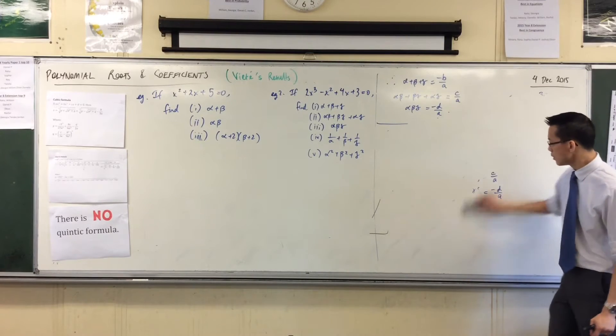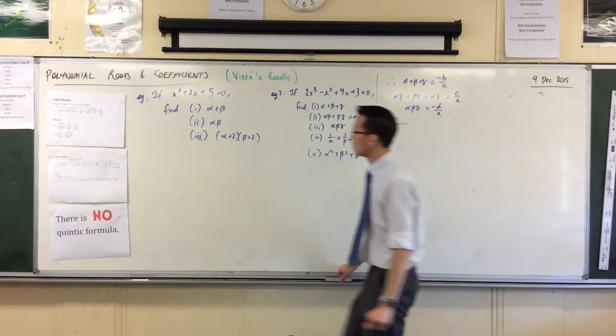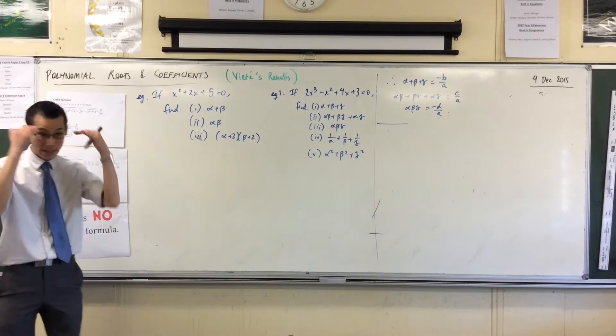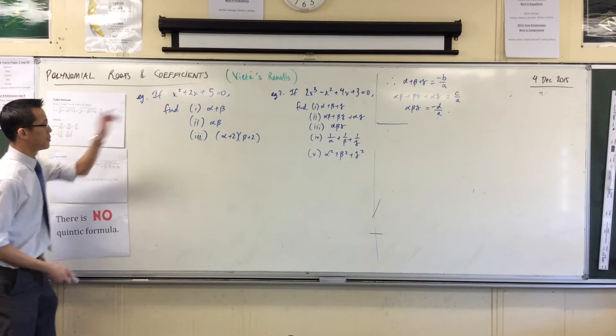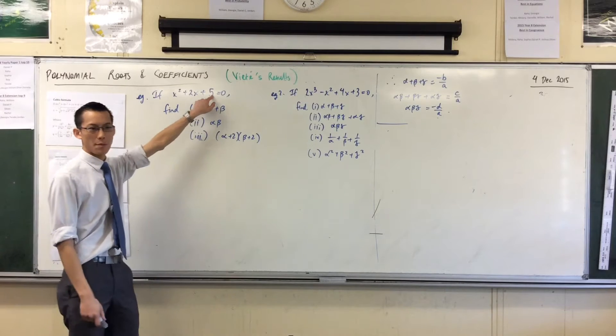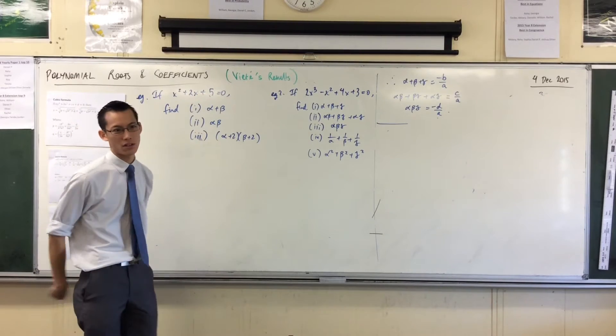Have a look at the first one. I've deliberately chosen one where, if you just mentally do your discriminant, B squared is 4, minus 4ac will be minus 20, so you're getting a negative discriminant here.